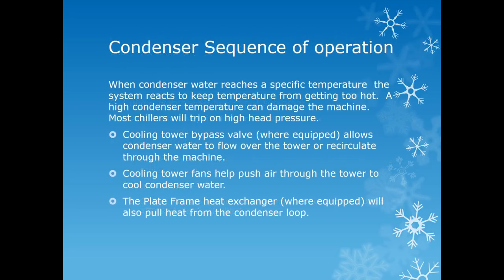On the other side of the chilled water system, when the water reaches a specific set point the system will react to help keep the temperature from getting too hot. Generally if the condenser water gets too hot the chiller can go out on a high head pressure, which can damage the machine. Most chillers do have some type of safety designed to protect them. The cooling tower bypass valve, when equipped, will open flow to the tower to flow the condenser water over the cooling tower and remove the heat. The cooling tower fans help push air through the tower to additionally cool the condenser water. A plate frame system, if equipped, will also help to pull the heat from the condenser loop.